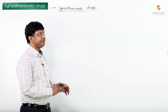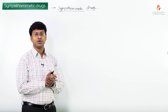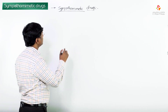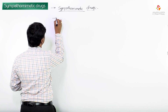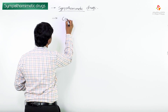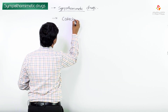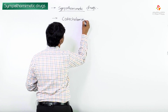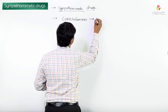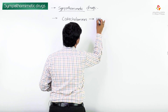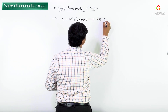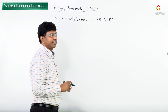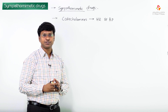Let me tell you the effect of sympathomimetic drugs — specifically catecholamines — on the heart rate and blood pressure of the individual.